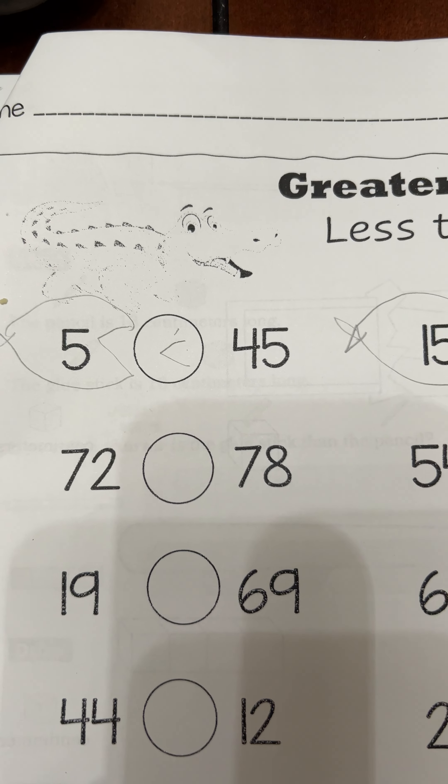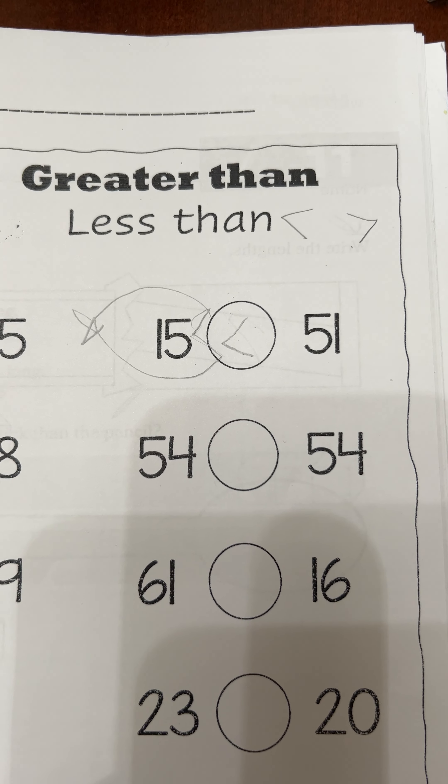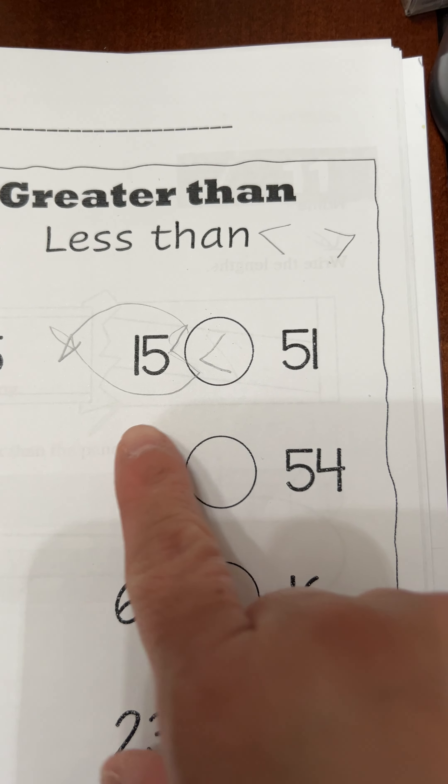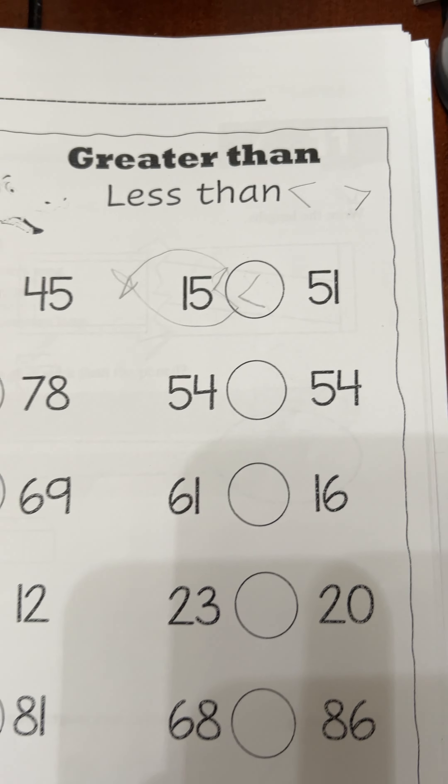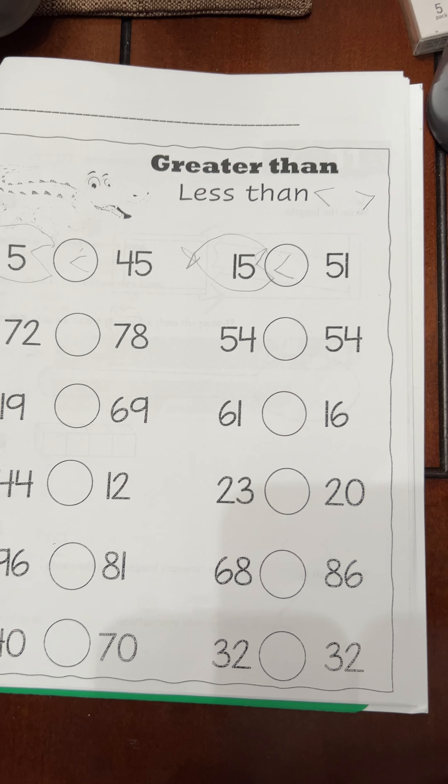Here too, we have 15 is smaller than 51, so the fish ate the smaller number. He said he still wasn't understanding very well, so what I did was I made him these little cutouts.